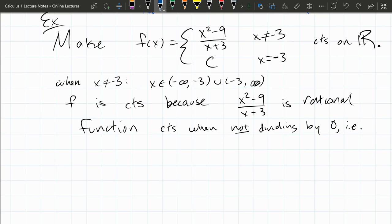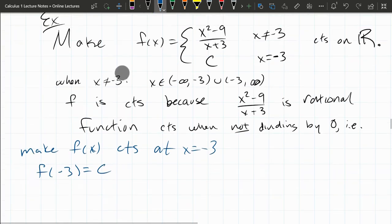So we'll start here. Make f(x) continuous at x equals negative 3. So let's start with the value this time. f of negative 3, looking at this function, when x is negative 3, the value is c. We get to pick c. So we'll decide what c is.